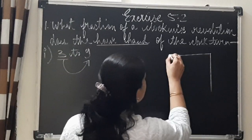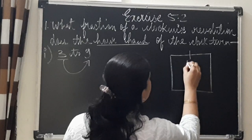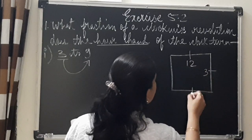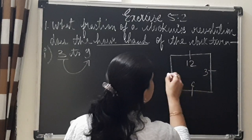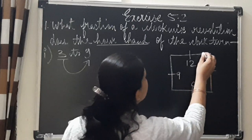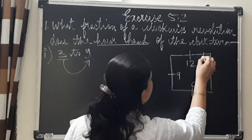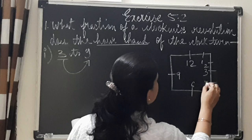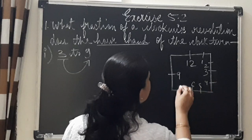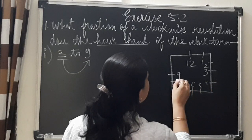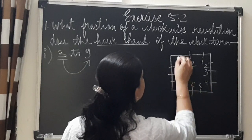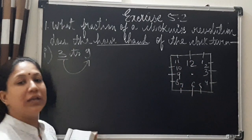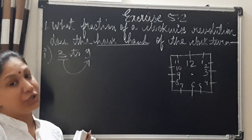Let us first draw a clock and mark the numbers. This is 3, here you have 6, here you have 9. So here you have 1, 2, this is 4, this is 5, 7, 8, 10 and 11. You can draw the clock in any shape.